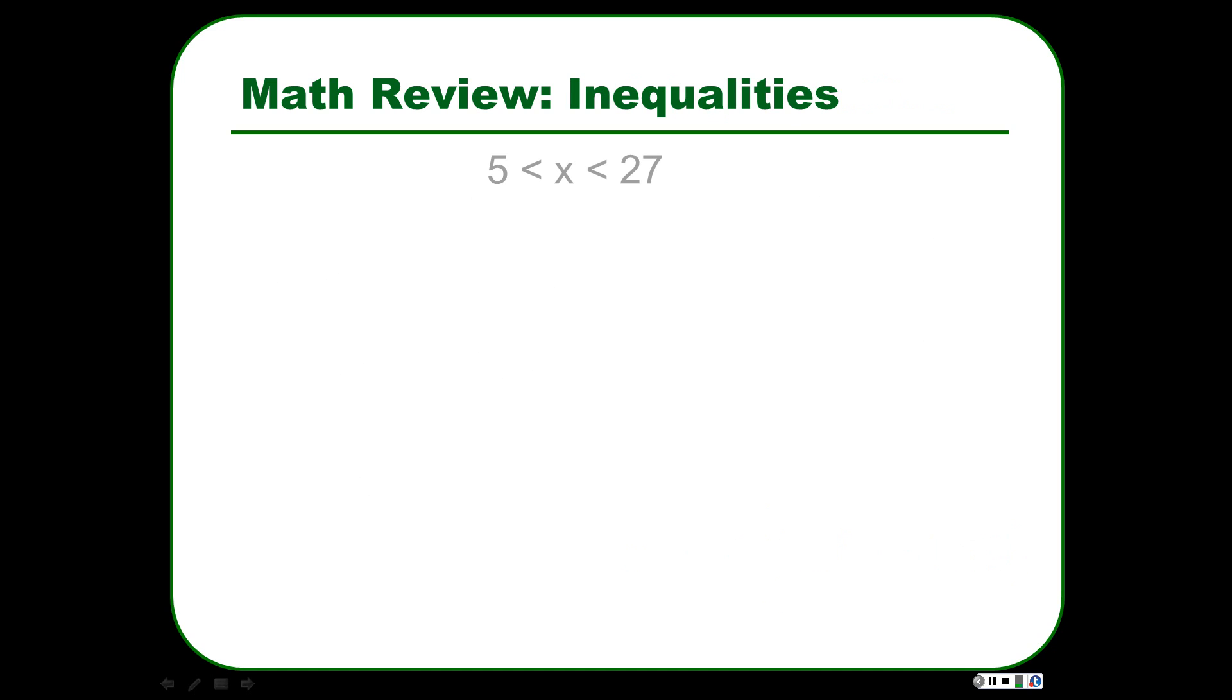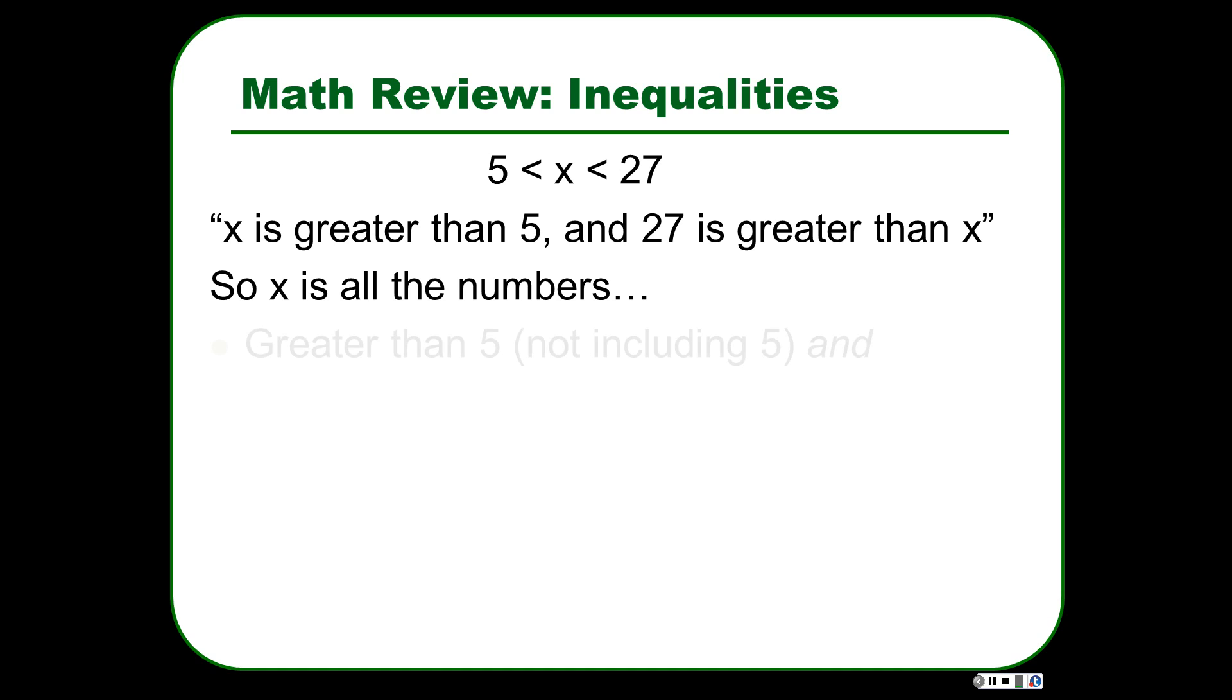Here's inequalities. Inequalities are something not a lot of people have had much fun with, but we need to deal with them for confidence intervals when we do statistics. So if we say this inequality here, 5 less than x less than 27, we can read that. x is greater than 5 and 27 is greater than x. Or you could say 5 is less than x and x is less than 27. You can say that a lot of different ways. But you need to break that down into what's actually going on. What is x here? We know two things about x. x has two relationships, one relationship here with 5 and one relationship with 27.